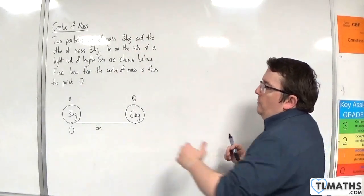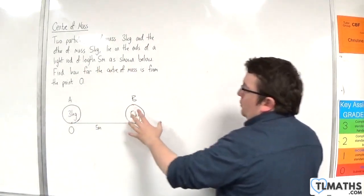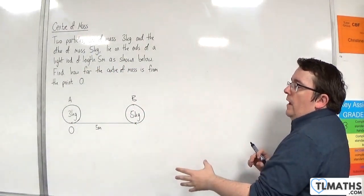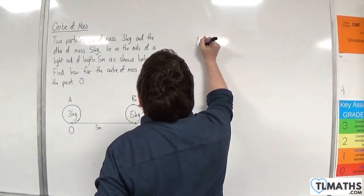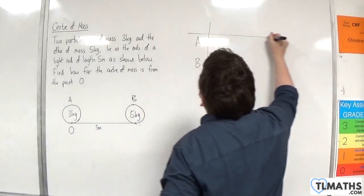So, here is our particle A, here's our particle B. And I'm going to tackle this as a weighted average problem. So, I'm going to set it up in a table. We're going to have particles A and B.